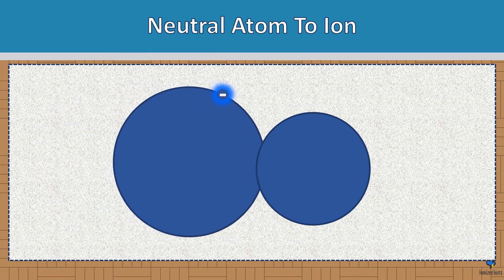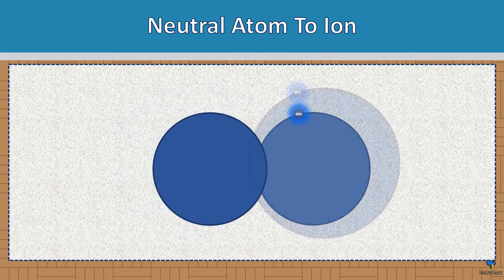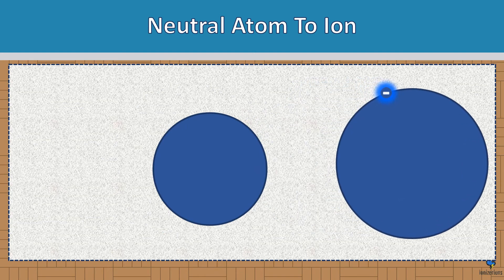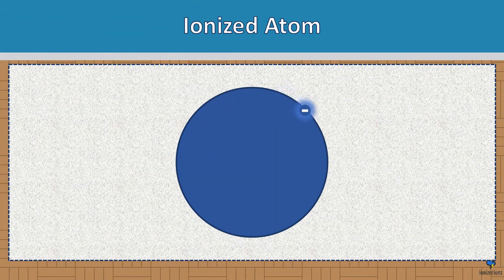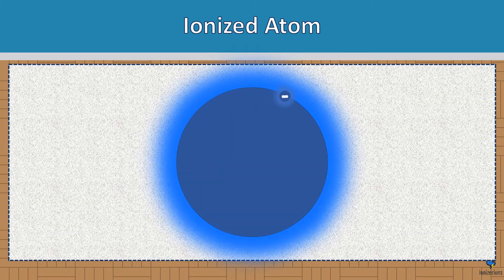Neutral atom to ion: the first atom gives an electron to the second atom, and the second atom becomes larger because it has an extra electron — therefore it is an ion. As you can see, the electron is going around the atom in what physicists refer to as a cloud. This is why I used the glow effect.